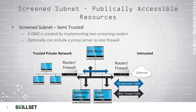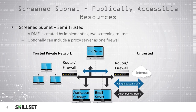In the graphic at the bottom, we have our trusted private network to the left, with a router firewall protecting that trusted private network from external traffic. In our DMZ we have an information server, an application gateway, and an email server. We then have another router firewall protecting the DMZ from the internet.